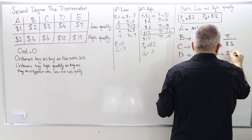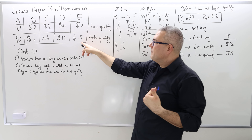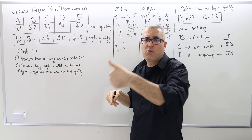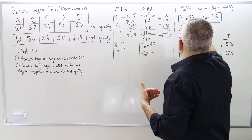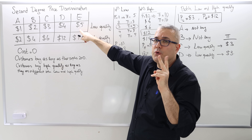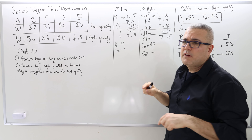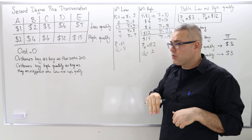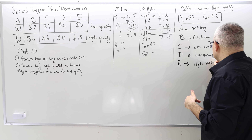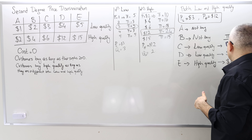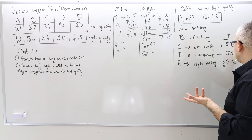Customer D pays $3 for the low quality. Customer E: if she buys low quality, her surplus is $5 minus $3 = $2. If she buys high quality, her surplus is $15 minus $12 = $3 — higher. So customer E will buy the high quality and pay $12. Total profit: $3 from C, $3 from D, $12 from E — that's $18.